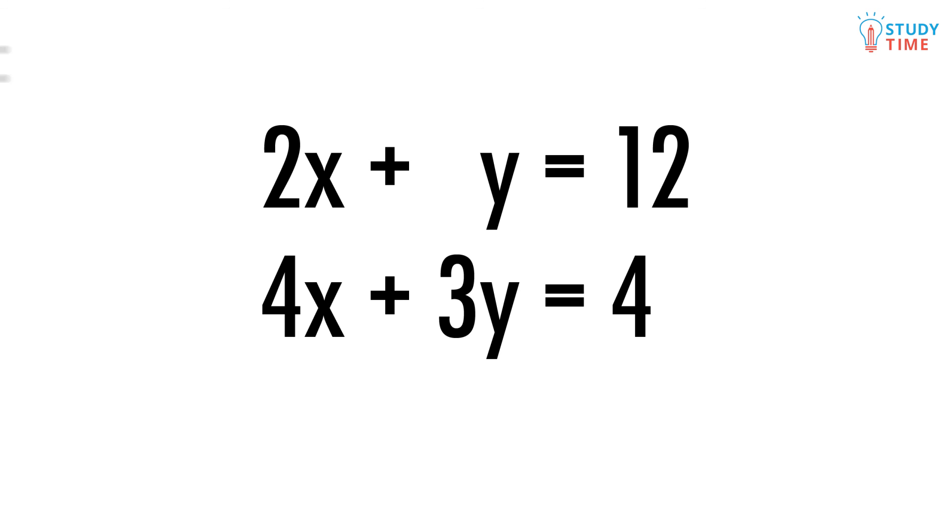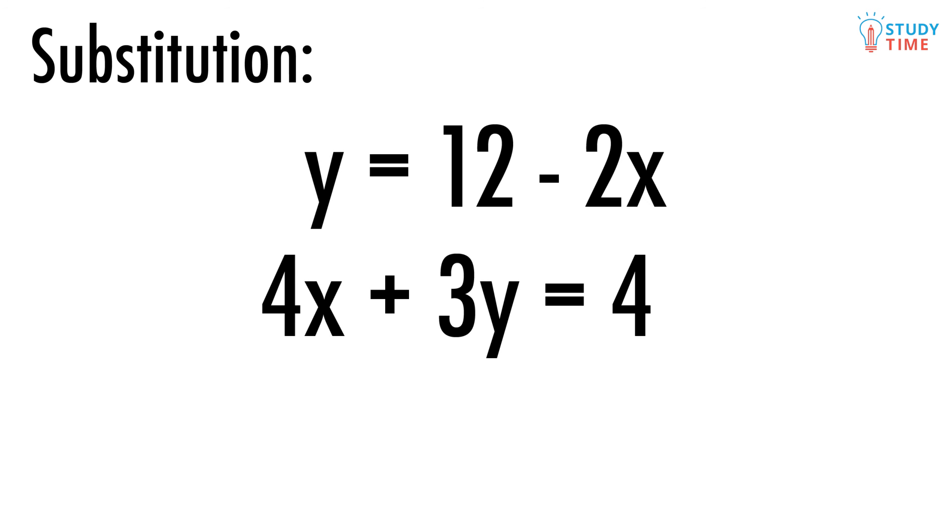Let's try the second method, substitution. We'll do it again with the same two equations. With substitution we solve an equation for one variable, say y, and then plug that into the other equation. It's simpler than it sounds, I promise. Pick an easy variable to solve for. The y in the first equation is on its own so we'll solve for that. Subtracting 2x from both sides we get y equals 12 minus 2x.